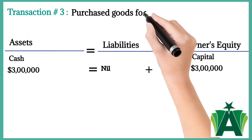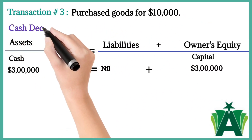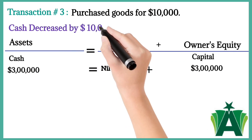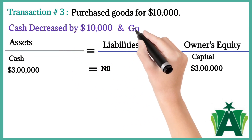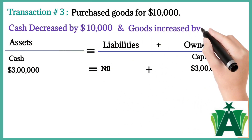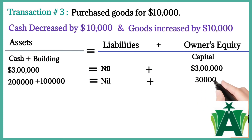Transaction number three: purchased goods for $10,000. This transaction brought two changes — cash decreased by $10,000 and goods increased by $10,000.